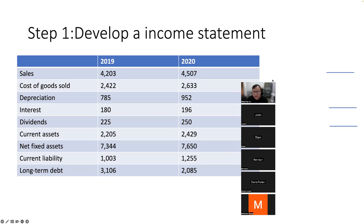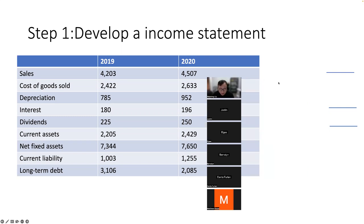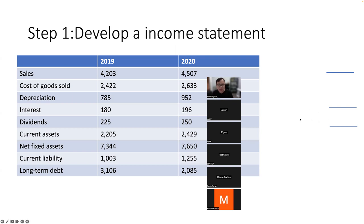You've likely learned about introductory financial accounting courses, including how to prepare an income statement. From the accounting perspective, four items relate to the income statement: sales, cost of goods sold, depreciation, and interest. Current assets, fixed assets, current liabilities, and long-term assets belong to the balance sheet.